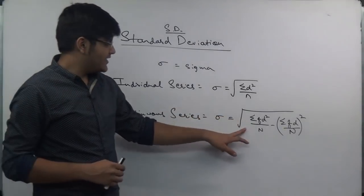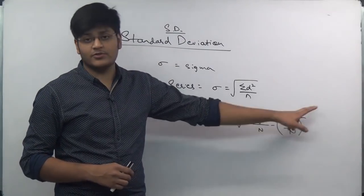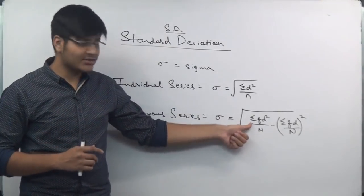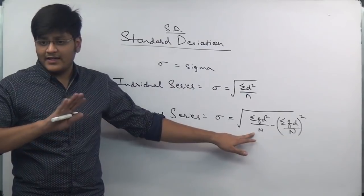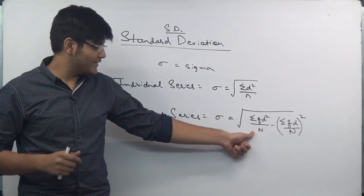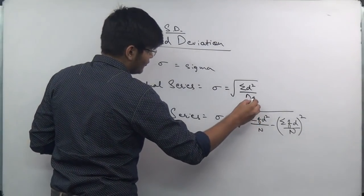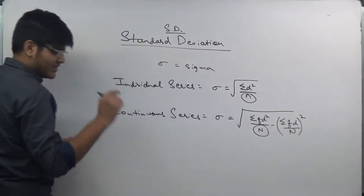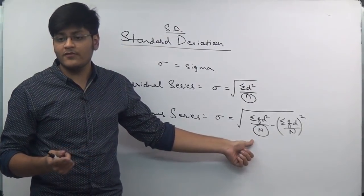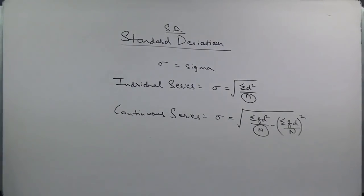In this formula, the whole square means the entire bracket is squared, while the individual square means only d is squared. A brief recap: small n equals the number of observations, and capital N equals the total of frequencies. Now let's take up a sum for individual series.